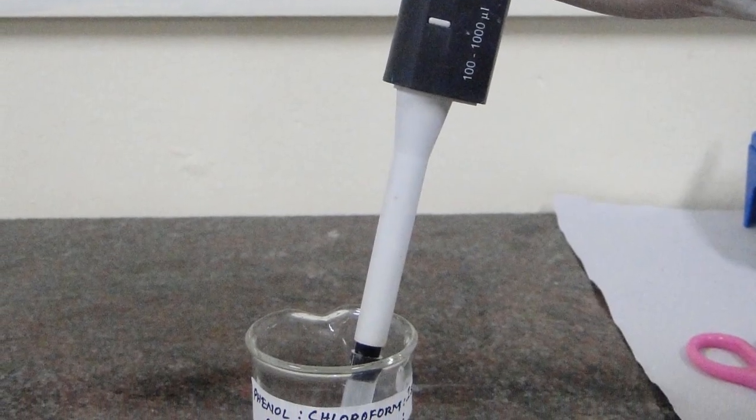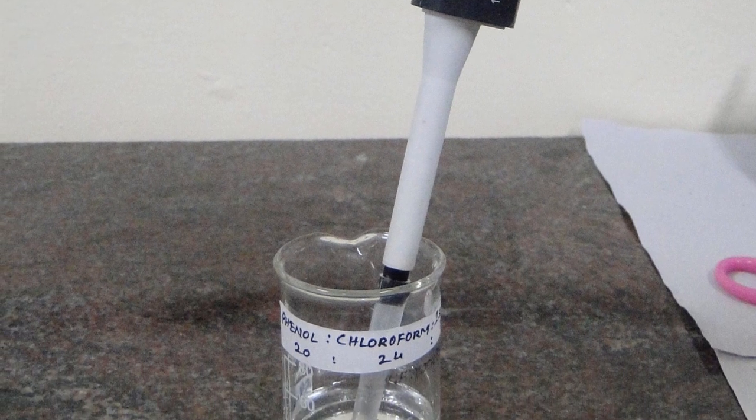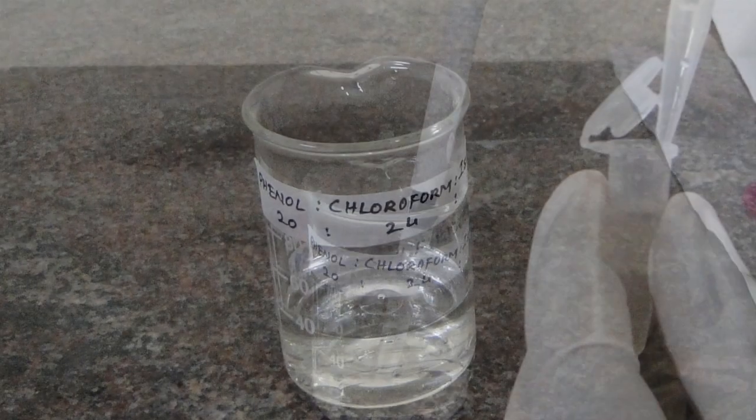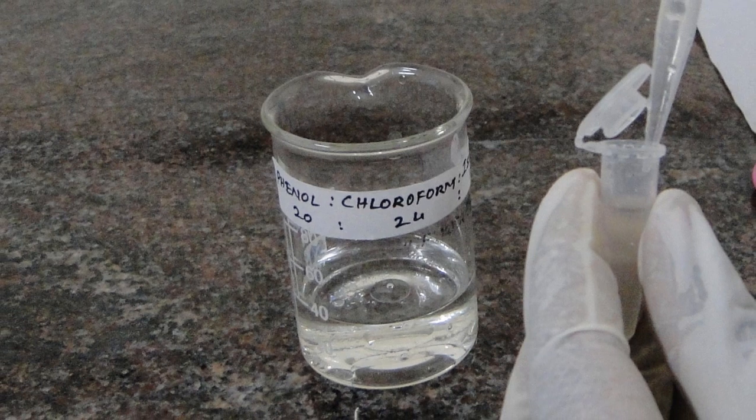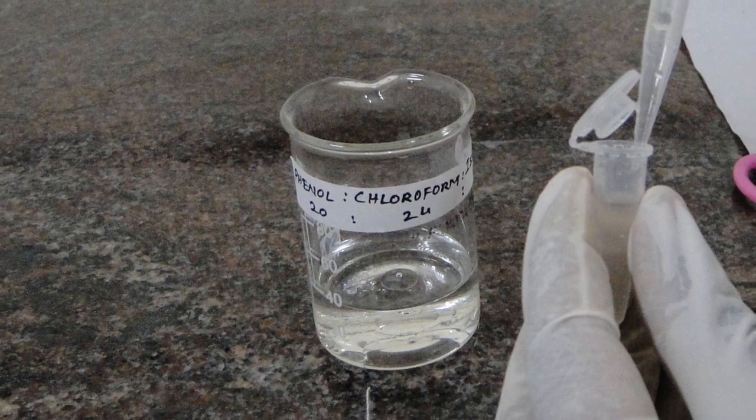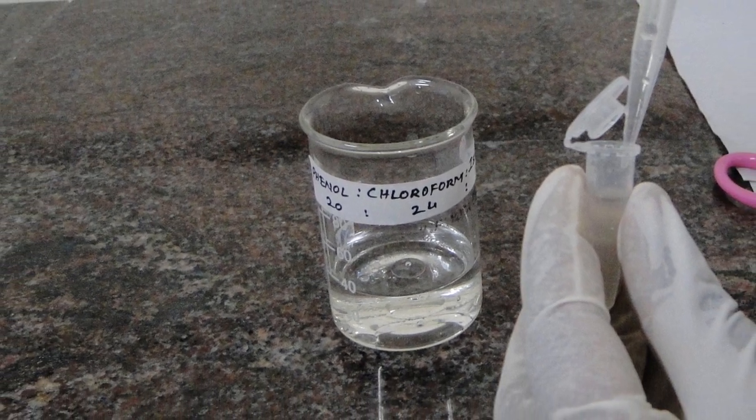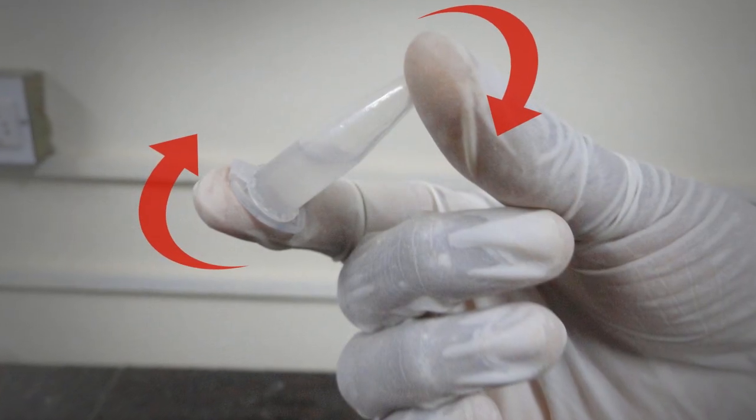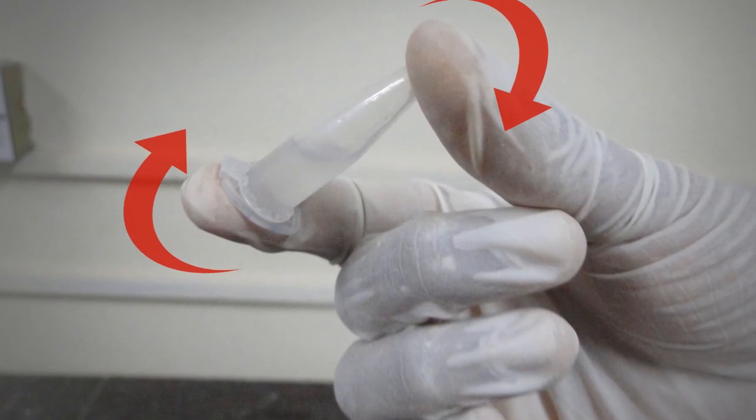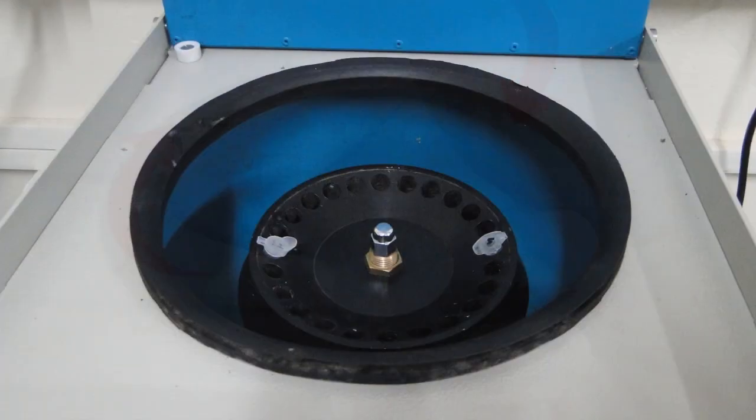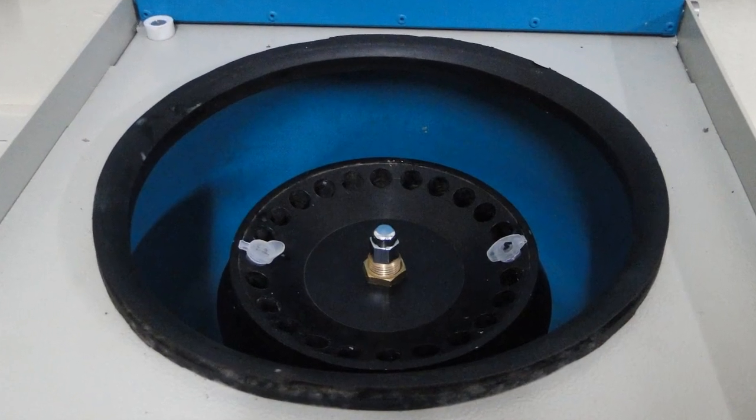Add 200 microliters of the reagent phenol to chloroform to isoamyl alcohol which is in the ratio 20 to 24 to 1 to the vial that contains supernatant. Mix it by inverting the vial approximately 5 times by hand. Centrifuge it at 12,000 RPM for 10 minutes.